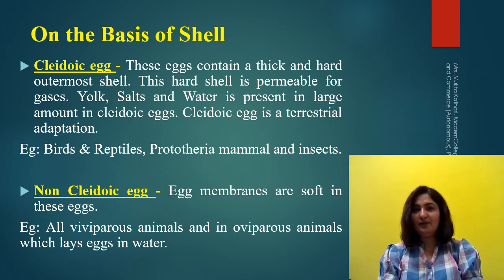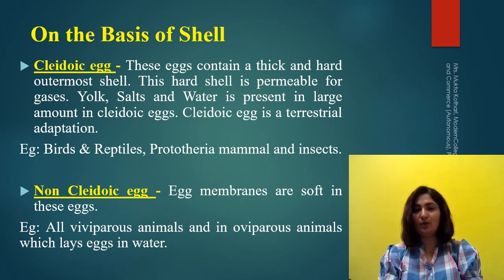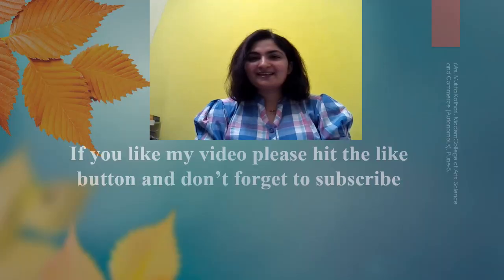Non-cleidoic eggs will not show the presence of a thick and hard outermost shell; instead their membranes are soft in nature. The example is all viviparous animals and also oviparous animals which lay their eggs in water.